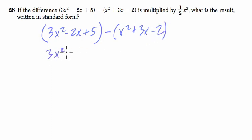So we want to subtract each term in the second trinomial. So it's minus x squared minus 3x and plus 2. You can also think of that as distributing your negative sign to each term in here.